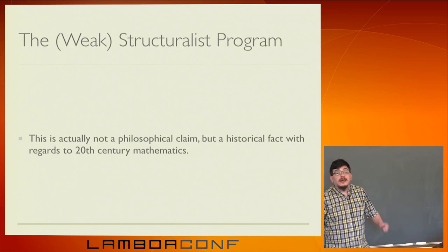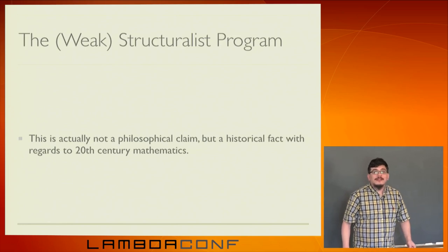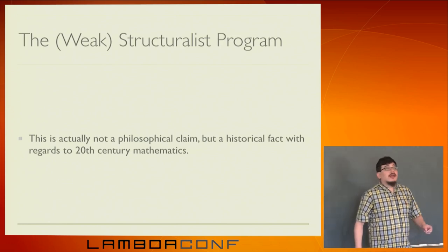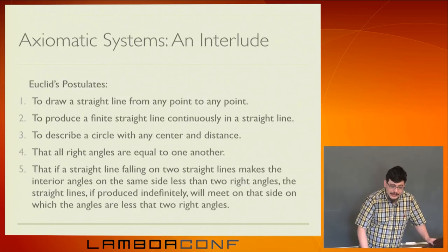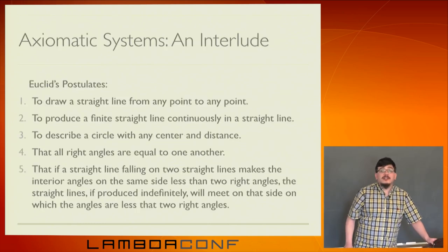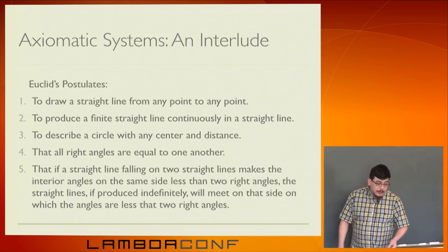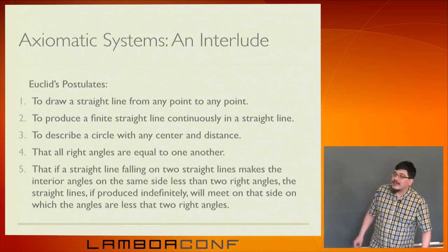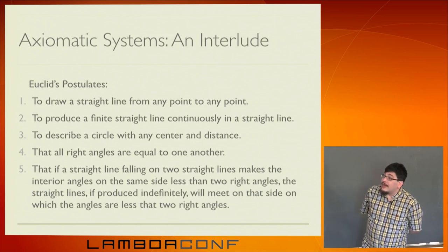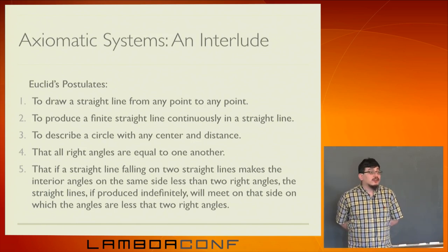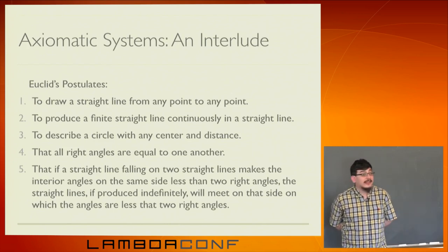Here were Euclid's postulates — his axioms actually came prior, but we'll call these axioms. This is how he gave geometry — arguably the world's first formal mathematical system and first axiomatic system. There's something interesting: he doesn't say 'it is possible to draw a straight line from a point to any point.' His axiom is the act of drawing the line. He says, 'I postulate to draw a line.' 'I postulate to produce a finite straight line continuously in a straight line.' In modern language: if I have two points, I claim I can draw a line; if I have a line, I claim I can extend it.